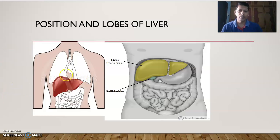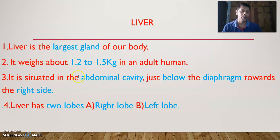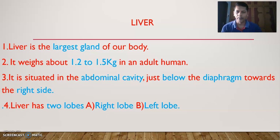Where is the liver in our body? You can observe in this slide. The liver is present in the abdominal cavity — not the chest cavity. In the abdominal cavity, it is located on the right side, below the diaphragm.